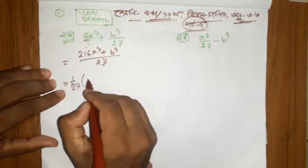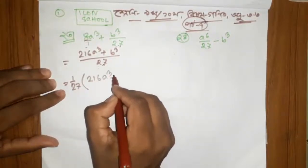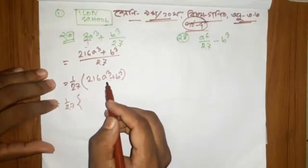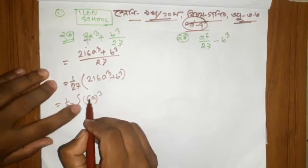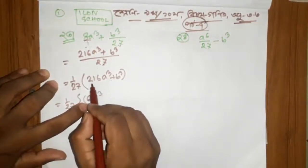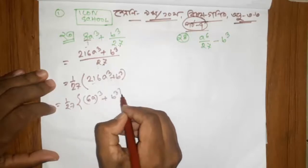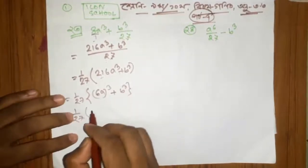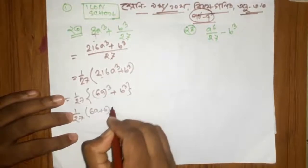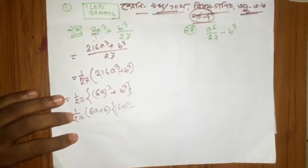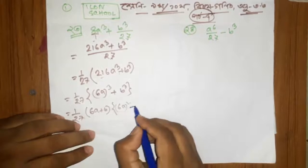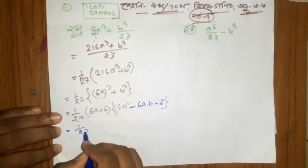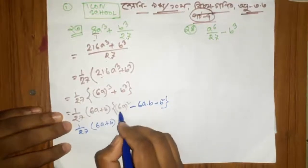If you are doing this, we will process this: 6a³, 3a³, 6a³, 3 - 6a³ plus eq, eq³, aq³, a³, a³, a³, a³, a³. Then a³, a square minus ab plus b square, 1 by 27, 6a plus b.